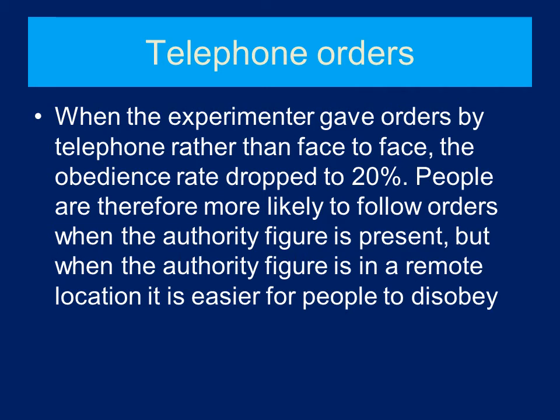The third variation is telephone instructions. Everything else stays exactly the same — the only change is that the experimenter gives instructions over the phone. In this situation, the obedience rate dropped to 20%, the lowest of the three variation studies. Milgram concluded that people are much more likely to follow orders when the authority figure is present, and when the authority figure is in a remote location it's much easier for people to disobey. This supports social impact theory, which relates to this variation's findings.